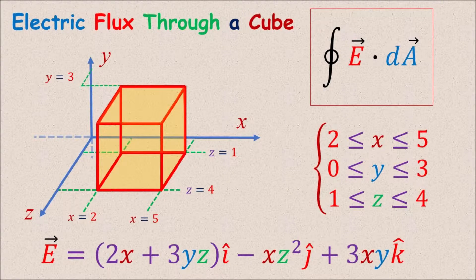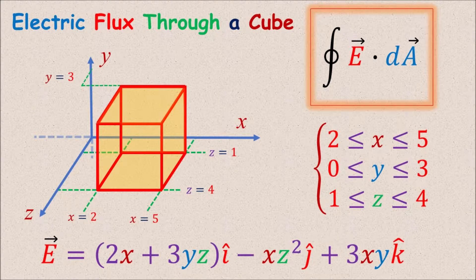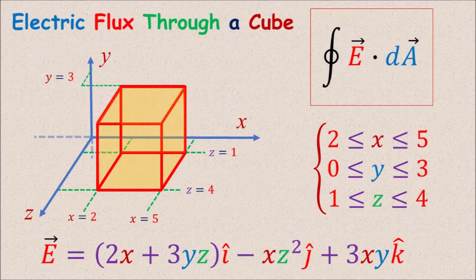Hi everyone, Kamran Nouri here. In this video we calculate the electric flux through a cube. In the expression of Gauss's law, we usually see the electric flux or the integral of E dot dA over a closed surface, which the law says is proportional to the total charge inside that closed surface. The exact mathematical meaning of this flux or surface integral might be unclear to some students, so this is an example to show how exactly it works.